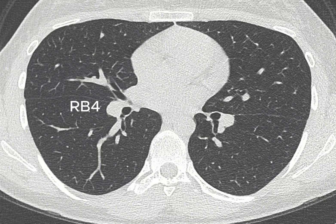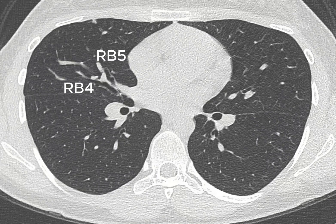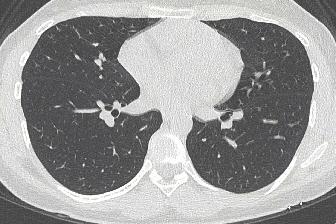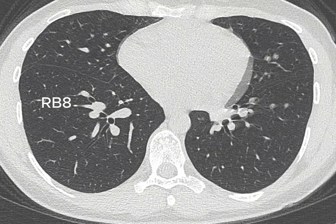Then we continue to the middle lobe bronchus, which bifurcates into the RB4, the lateral segment, and the RB5, the medial segment. Traveling into the lower lobe bronchus, we can identify the RB7, the medial basal branch. And finally on the right side, we can identify the RB8, the anterior basal segment, the RB9, the lateral basal segment, and the RB10, the posterior basal segment.